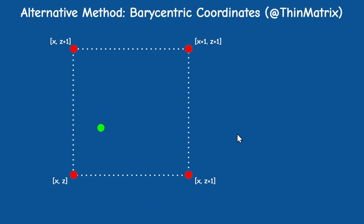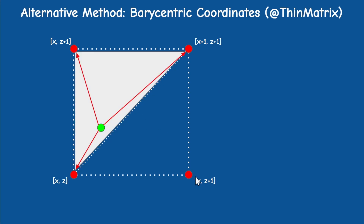Before we jump to the implementation I'd like to mention a different method by ThinMatrix which I found while researching for this tutorial. You can find the link to his video in the description below. He finds the specific triangle where the camera is located instead of just the quad, and then performs barycentric interpolation between the vertices of that triangle. You could argue this approach better matches the fact that we are rendering two independent triangles for each quad. I tend to prefer the bilinear method because I think it creates a smoother effect, but you are encouraged to play with both methods and decide what works best for you. Don't forget to let me know the results in the comments below.